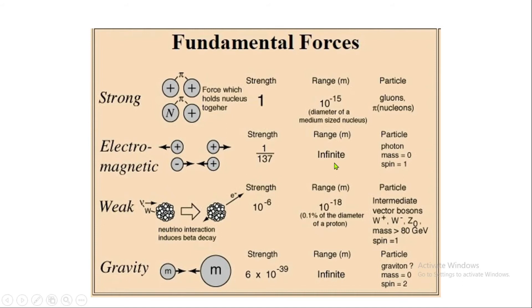Because the electromagnetic force has infinite range, we feel it in daily life. Our bodies contain protons and electrons, which is why bodies attract or repel each other. The next force is the weak force, which is responsible for beta decay. Its strength is very small — 10⁻⁶ — and its range is also very small: 10⁻¹⁸ meters.